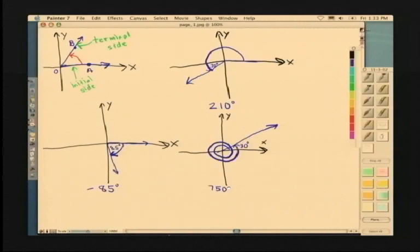The last angle I drew, the negative 85 degree angle, is a fourth quadrant angle.